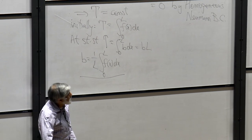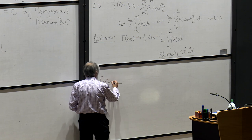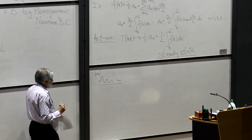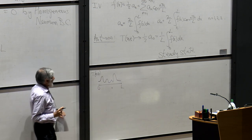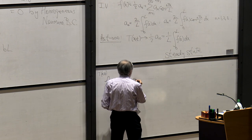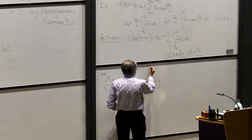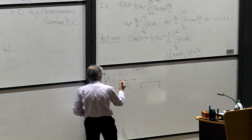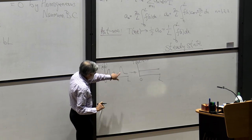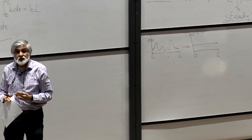Physically, if you start with any initial temperature distribution T(x,0) = f(x), diffusion will smooth it out. As t → ∞ you get a flat constant distribution whose area under the curve equals the area under the initial curve, because the total amount of stuff stays constant.